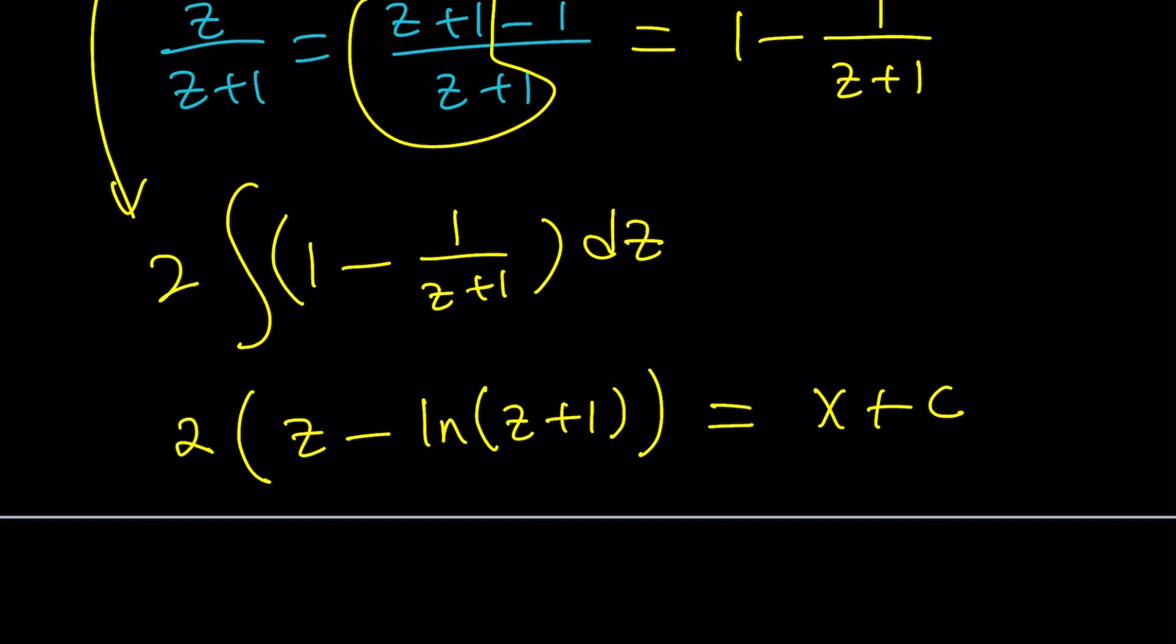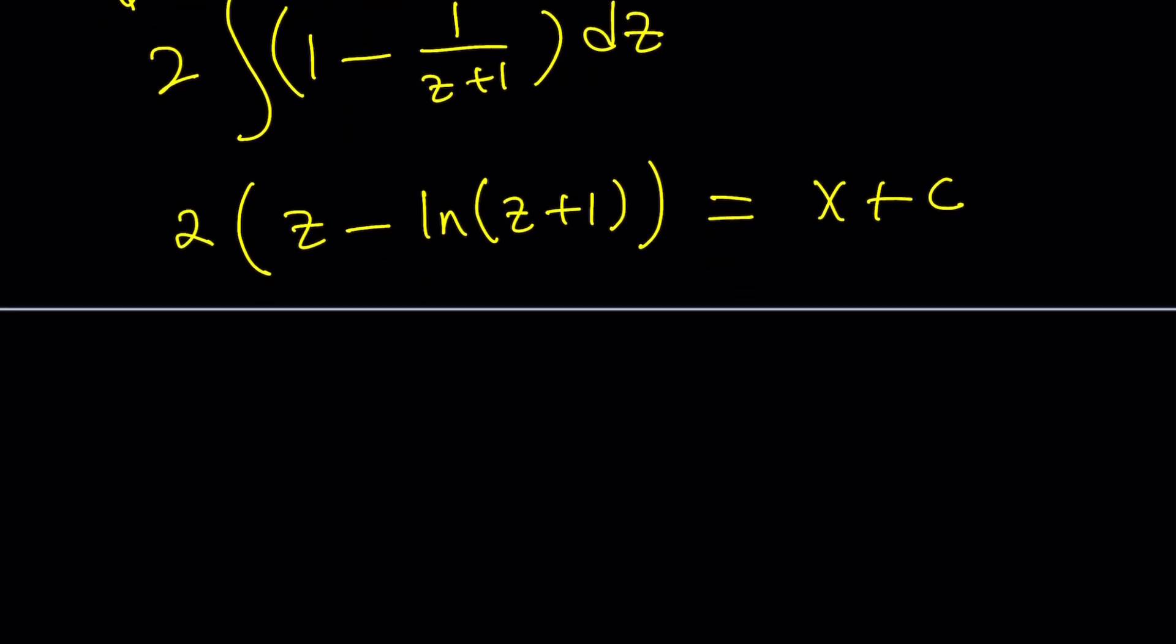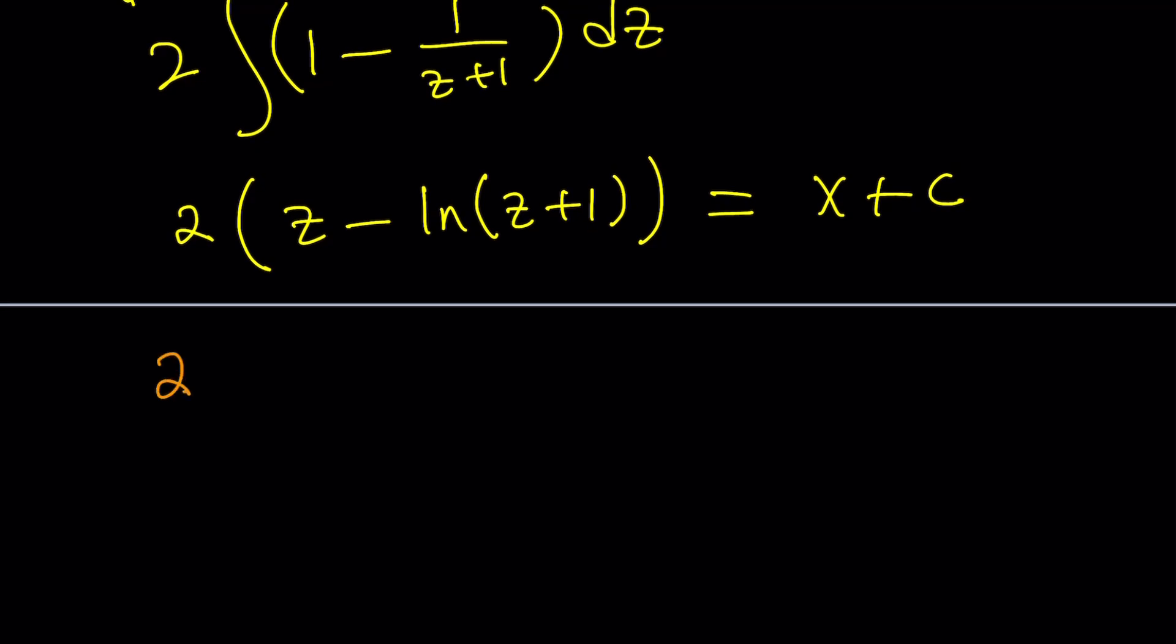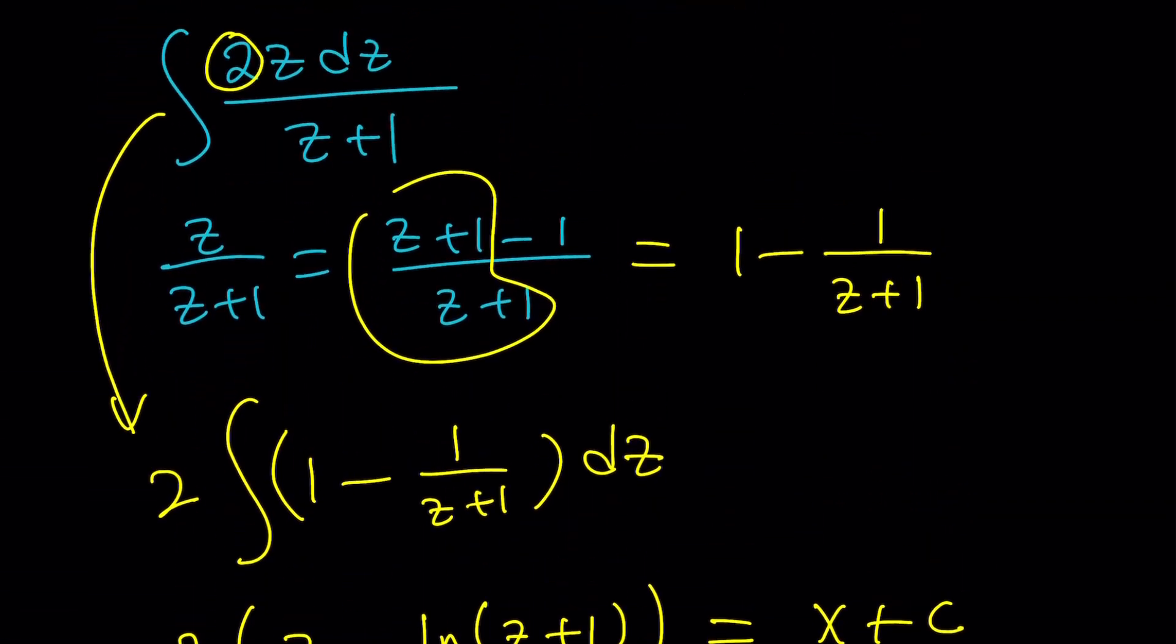Now, let's go ahead and back substitute. We're going to replace z with square root of u plus 1. So, it's going to be 2 times square root of u plus 1 minus ln square root of u plus 1 plus 1. Make sense? And that is equal to x plus c. Great. So, that should be the answer, right? Well, almost there.